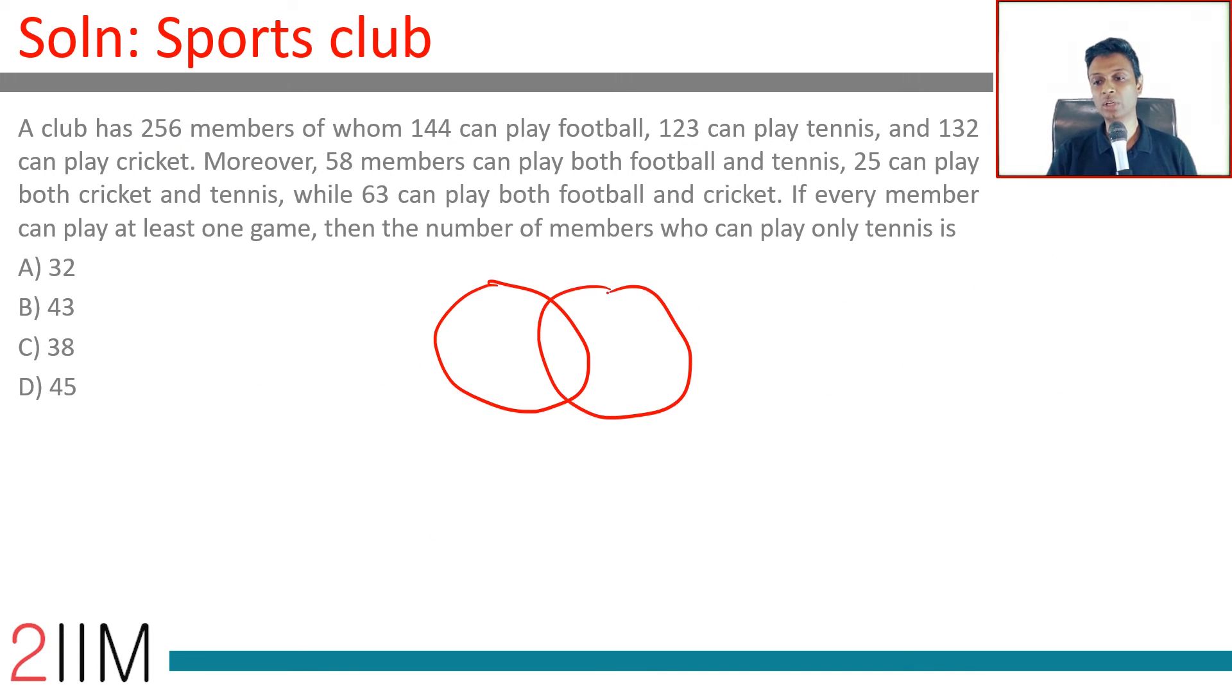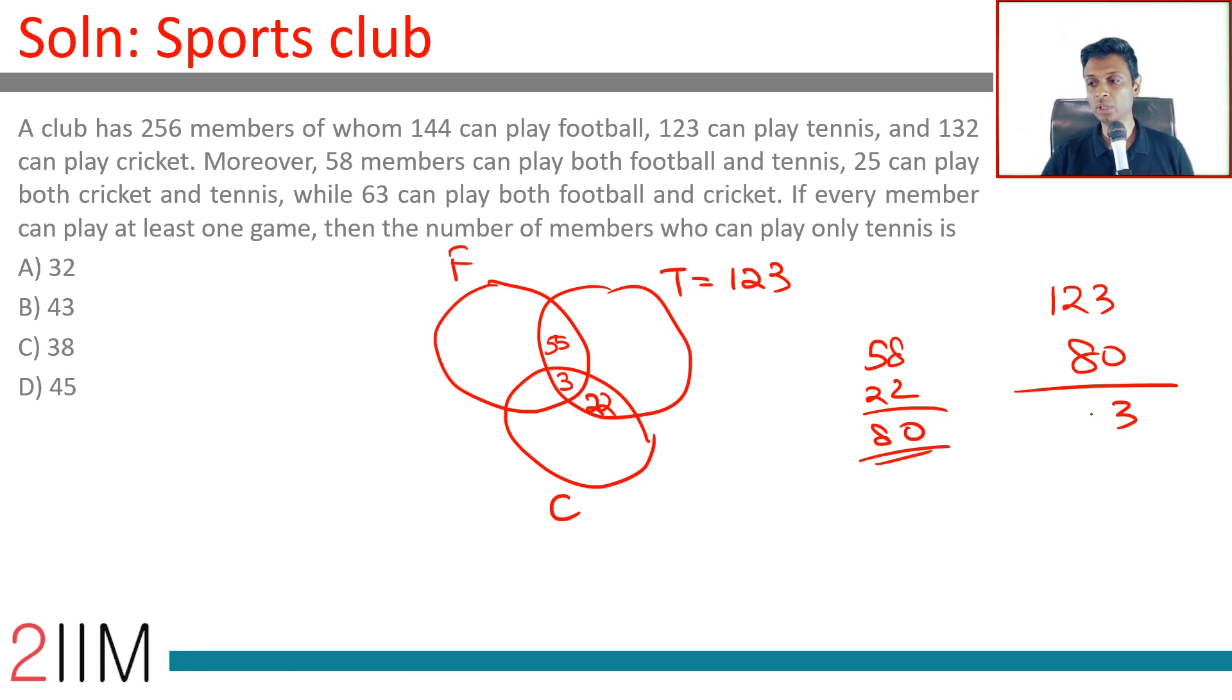Let's say we have football here, tennis here, cricket here. We need to focus only on tennis. This is 123. This number in between is 3. Football and tennis is 58, so this is 55 (58 minus 3). Cricket and tennis is 25, so 25 minus 3 is 22. So these three account for 55 plus 3 plus 22 which is 80. 80 out of 123, 80 have been accounted for - remaining 43 play tennis only.